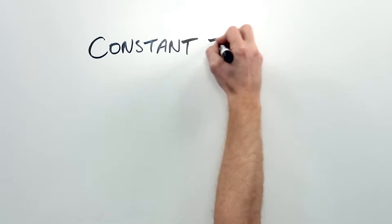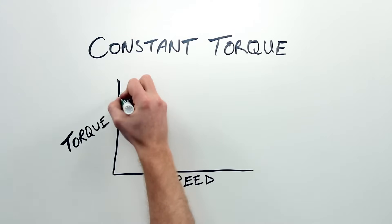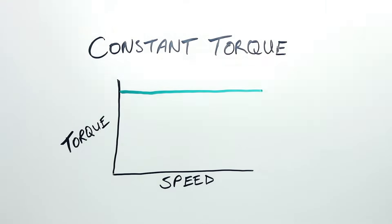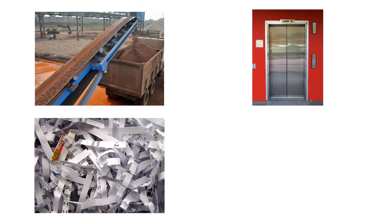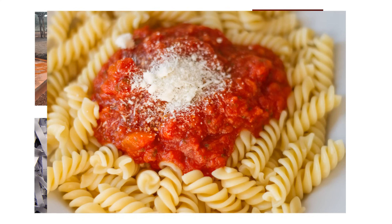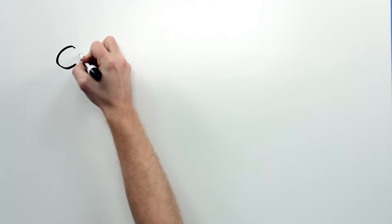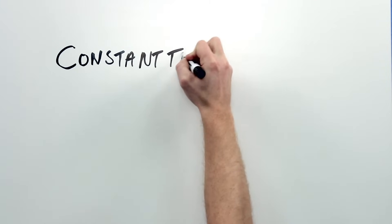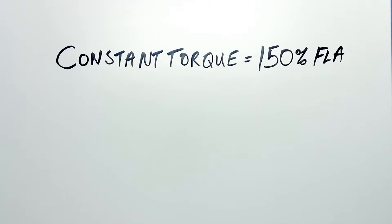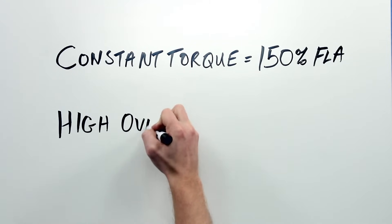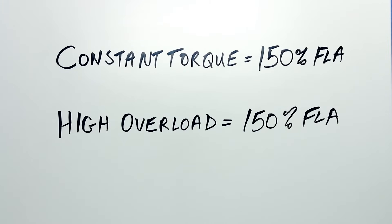If the load is not variable torque, it's likely what's called a constant torque load. Constant torque loads require the same amount of force to move the load at slow speeds as it does at higher speeds. Examples of constant torque loads are conveyors, elevators, shredders, or extruders that extrude the pasta that you buy at the grocery store — basically any load that isn't a fan, pump, blower, or compressor. Since constant torque loads can change frequently, like more boxes being added to a conveyor belt, the drive must be able to handle brief periods of extra current drawn by the motor. So we size it at 150% of the motor's FLA for constant torque loads. We call this a drive with high overload capability.